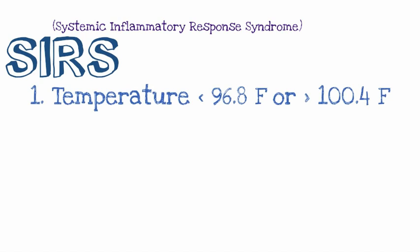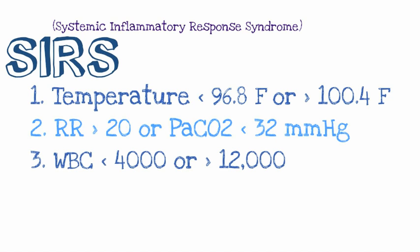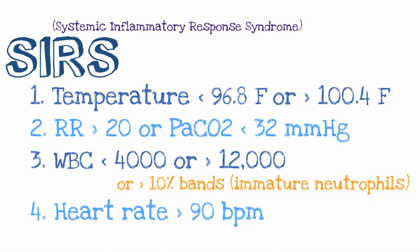When talking about sepsis, we always have to mention SIRS. SIRS is the Systemic Inflammatory Response Syndrome. You need two criteria to meet SIRS, and these criteria include temperature less than 96.8 — so they're hypothermic — or greater than 100.4, respiratory rate greater than 20 or a PaCO2 less than 32, a white count less than 4,000 or greater than 12,000. You may also see a bandemia, meaning greater than 10% bands or immature neutrophils. And finally, a heart rate greater than 90 beats per minute. So SIRS helps identify an underlying infection and plays a role in the definition of sepsis.